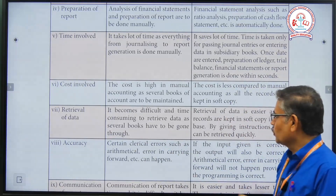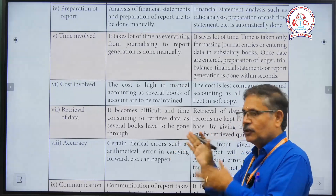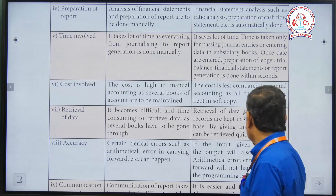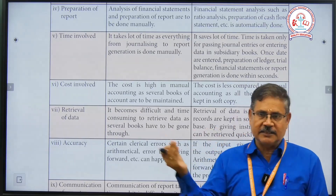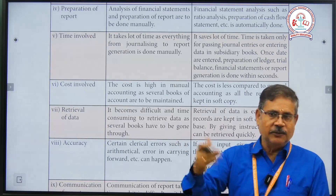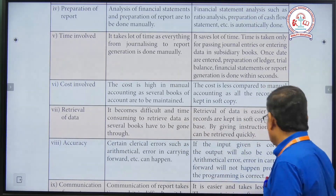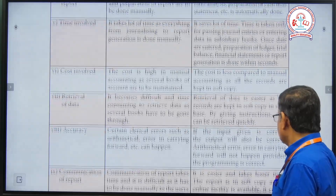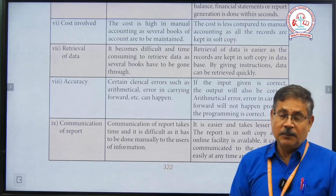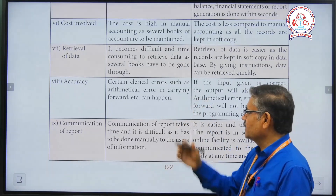Retrieval of data in the manual system is difficult and time-consuming — you have to go through all the records. But in the computerized system, records are kept in copy data, and whenever you need them, you can quickly retrieve the entries. Regarding accuracy, certain clerical errors can happen in the manual system because we are human beings — some errors will occur.